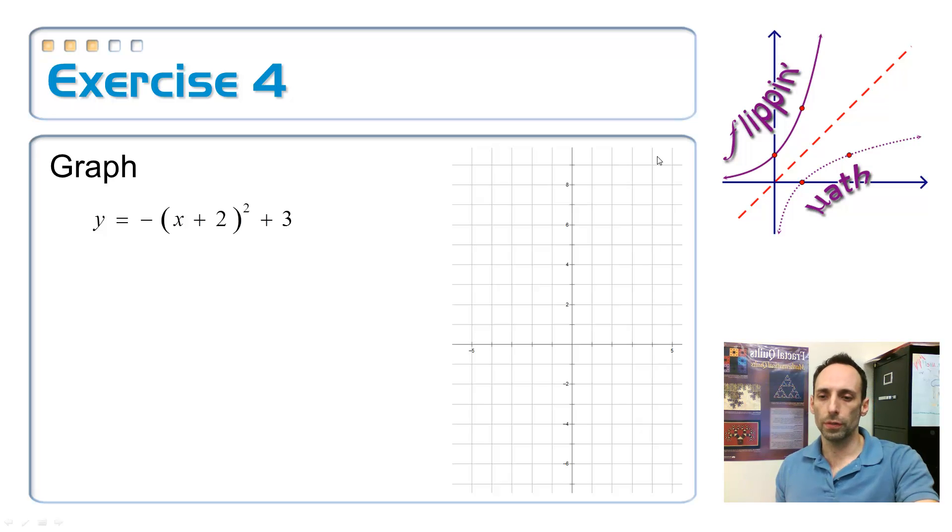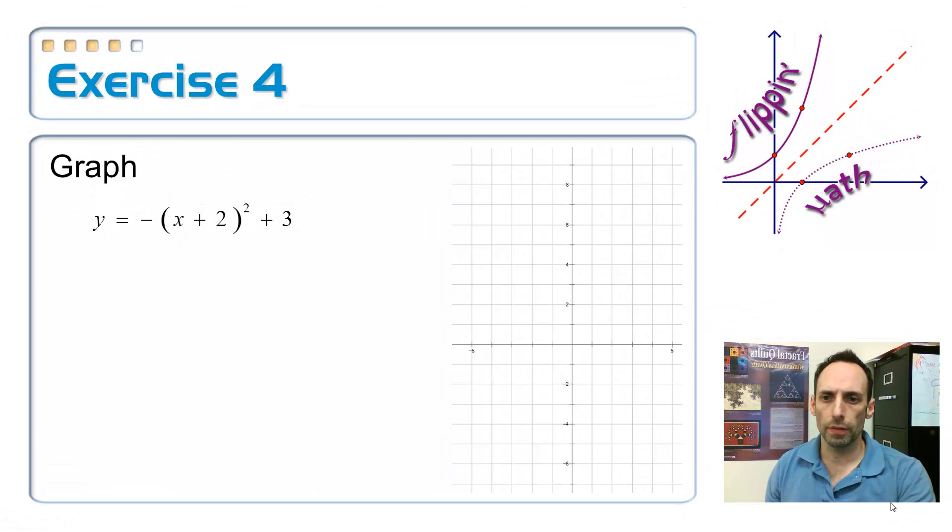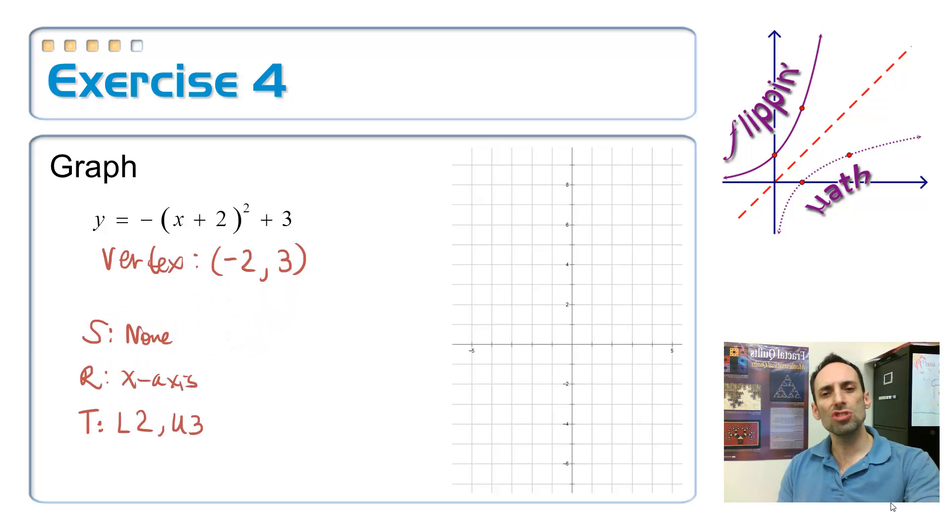So here's one for you to try, Exercise 4. There's your quadratic equation. Hopefully you have some graph paper. Graph that one, come back and see me and see if you graphed it properly. Whenever you want to graph this thing, maybe you listed the vertex and your SRT transformations. Vertex is at negative 2, 3. It's negative 2 because this is the opposite sign. I'm not scaling it because it's an understood 1. I am reflecting it because it's negative. And I'm moving it left 2 and up 3.